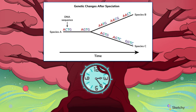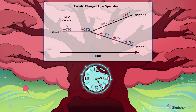What if closely related species evolved super different phenotypes? Or distantly related species evolved super similar phenotypes? In these situations, DNA sequencing and molecular clock models are extra valuable in figuring out who is most closely related to whom.